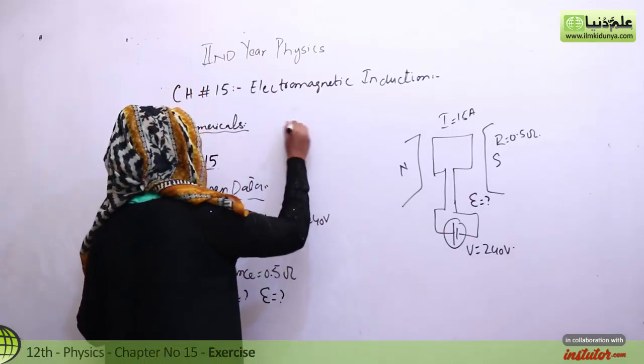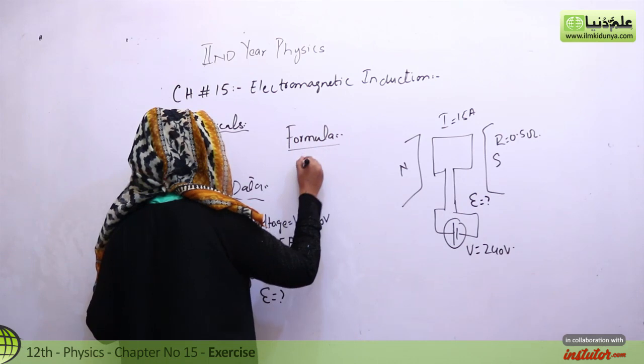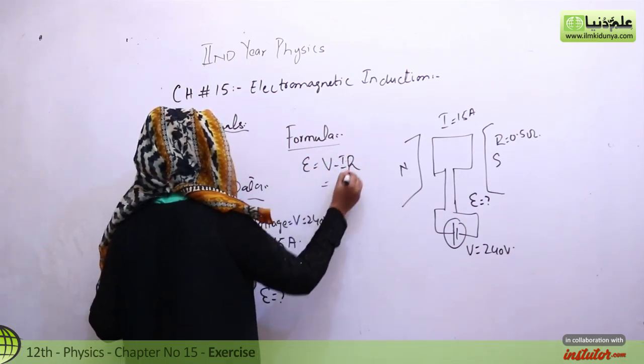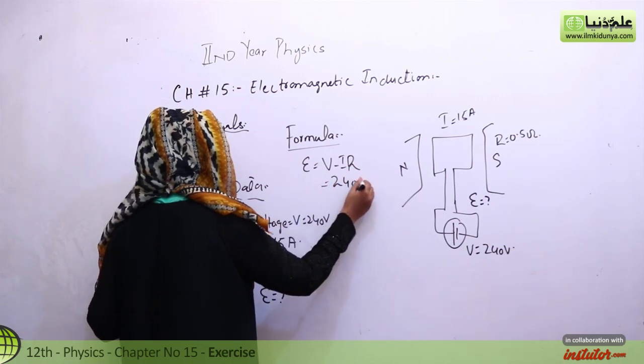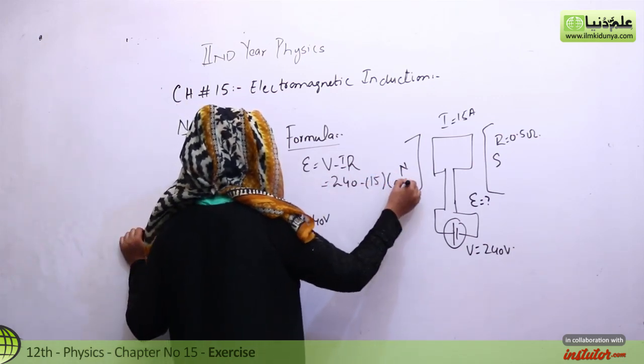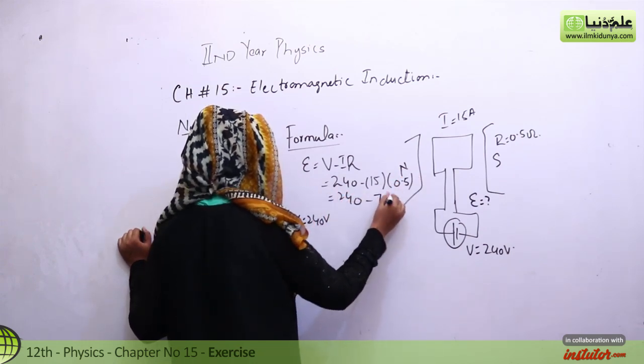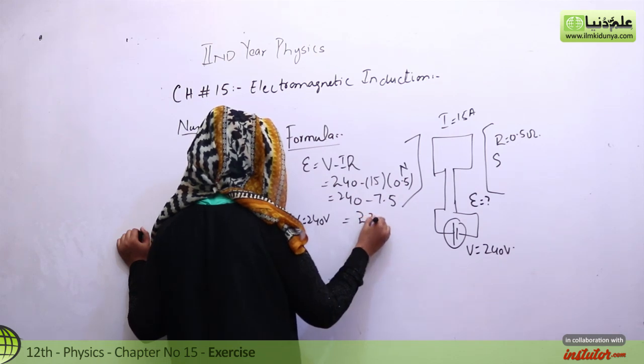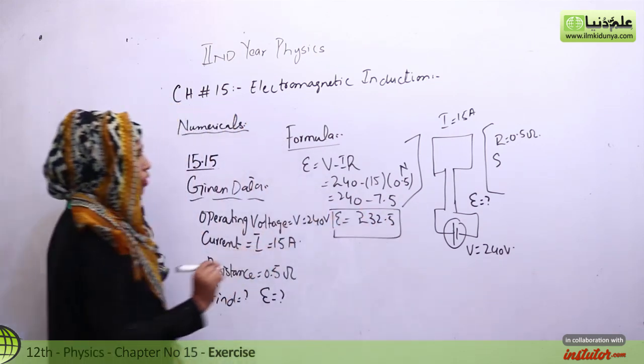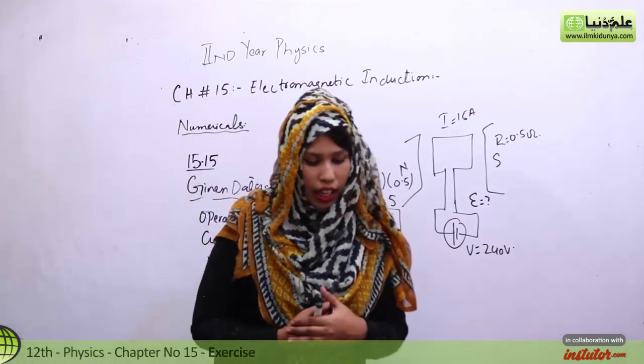For this, the formula we use is E equals V minus IR. So V is 240 minus current 15 times resistance 0.5 ohm. That's 240 minus 7.5, which equals 232.5 volts.